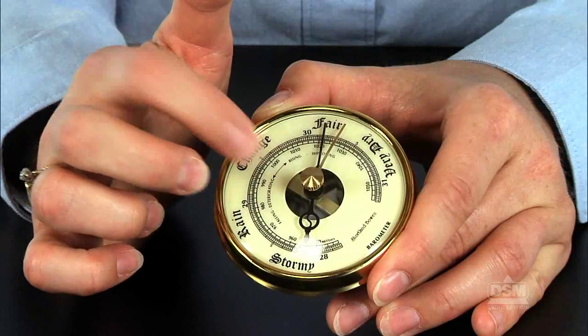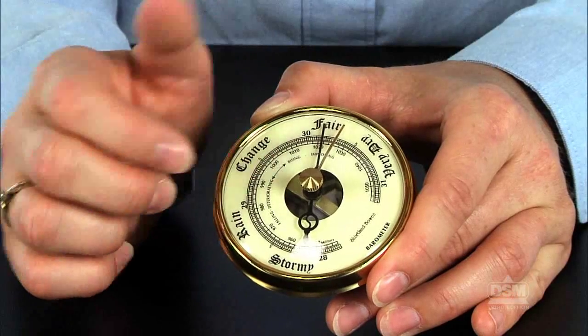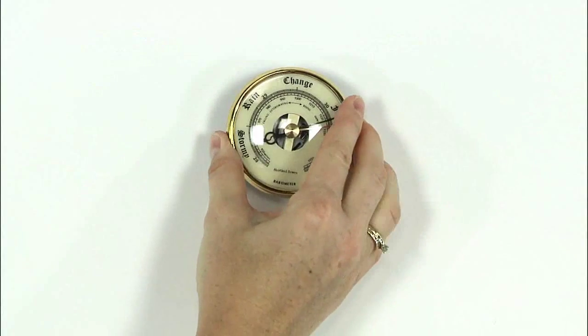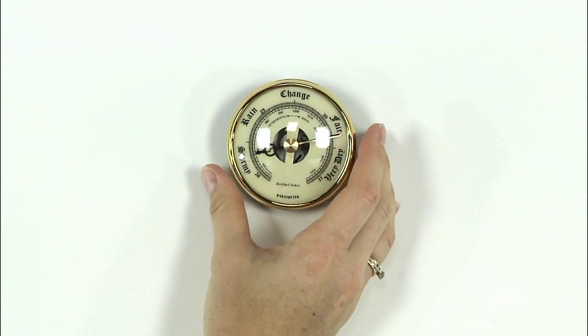Then, tap gently on the glass to make the needle settle into position. Select a place in the classroom where the barometer can be hung or rested. Students should be able to read the barometer without disturbing it.